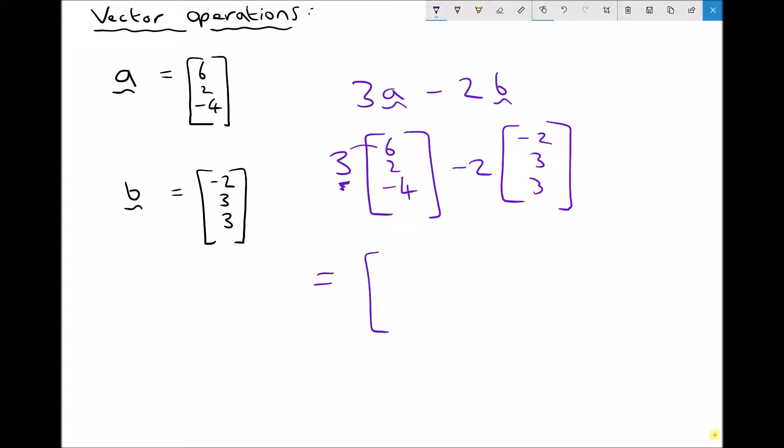So I would need to do 3 times the 6 first of all. Well 3 times 6 is 18. Then I would need to do 3 times the 2. Well 3 times 2 is 6. And finally I would need to do 3 times the minus 4 which is minus 12.